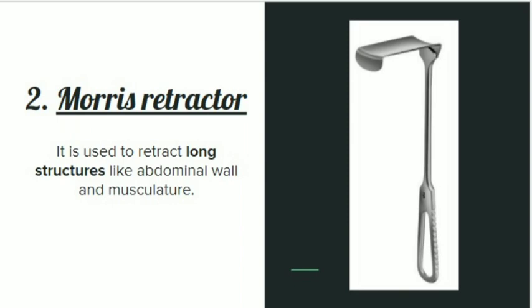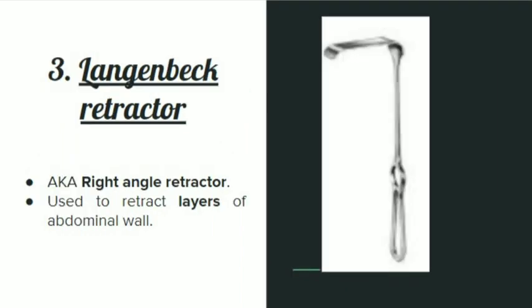The second retractor is the Morris retractor. It is used to retract long structures like the abdominal wall and musculature. It is smaller than the Deaver retractor but bigger than the next retractor. A hook is formed at its distal end, which helps in retracting and holding those structures.